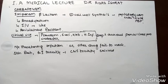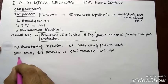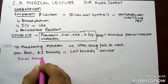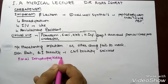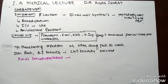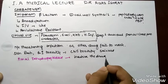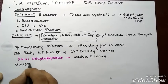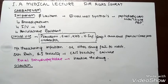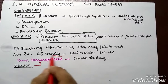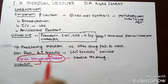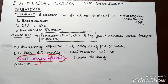Imipenem is inhibited by the enzyme renal dehydropeptidase. This enzyme inactivates the drug. To counteract this, we combine imipenem with cilastatin. Cilastatin is an inhibitor of renal dehydropeptidase, so it inhibits this enzyme and keeps our drug functional.